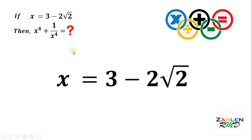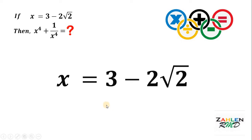We don't want to substitute the value of x and raise to the fourth power. This is not a good way, because 3 minus 2 square root of 2 raised to the fourth power means we need to multiply that expression four times, and we also have 1 over that. So, that solution is quite long. The more steps you have, the more likely you are to make a mistake. Therefore, we need to find another way to find the value of x to the fourth plus 1 over x to the fourth.